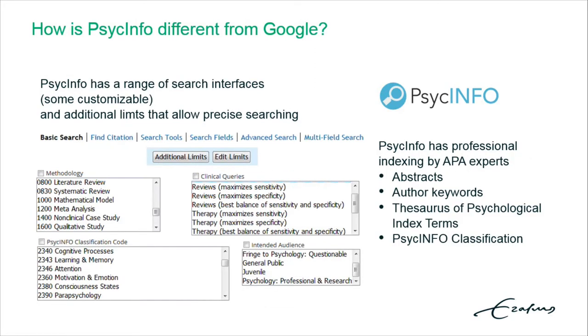Then you can use the filtering capacity of PsycINFO to look for reviews, mathematical models, meta-analyses — those are types of papers you could look for. You can also use as criteria sub-areas within psychology, for example my area of cognitive processes, and language and memory.